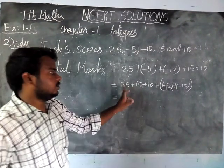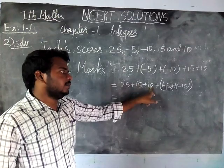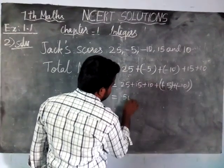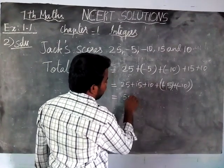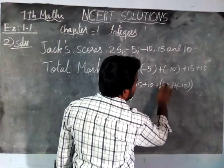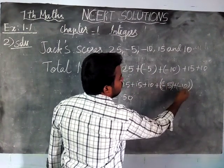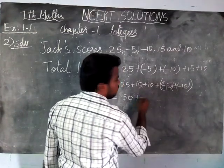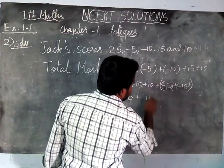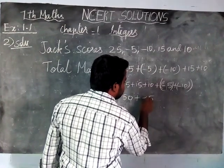Now we are adding 25 plus 15 equals 40, and 40 plus 10 equals 50. Now we are adding both negative numbers: 10 plus 5 is equal to 15. Both have a minus sign, so it is minus 15.